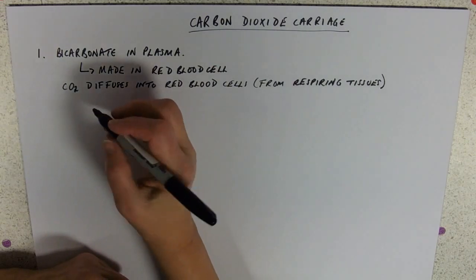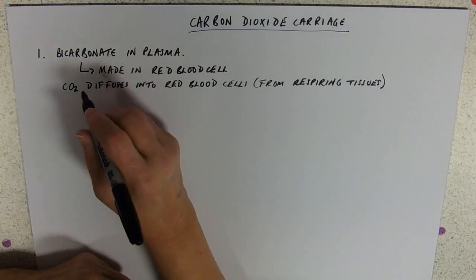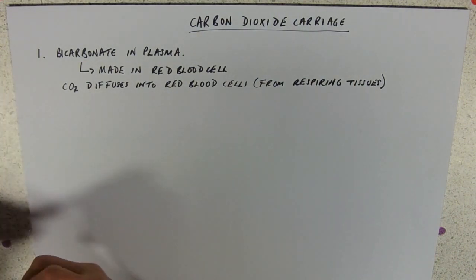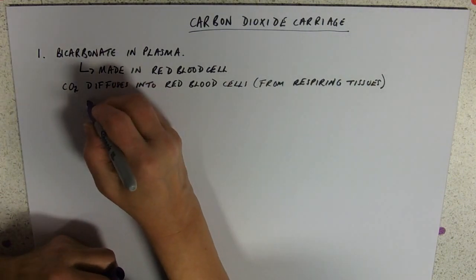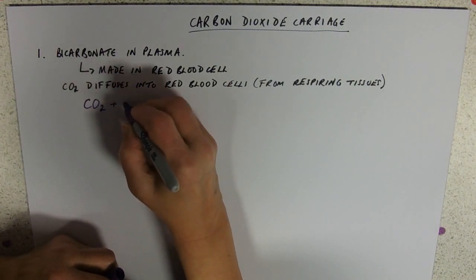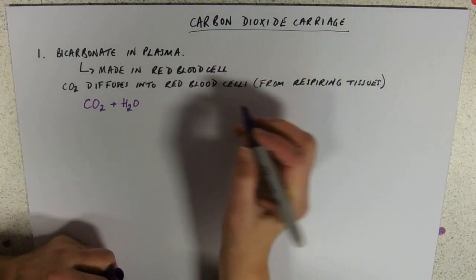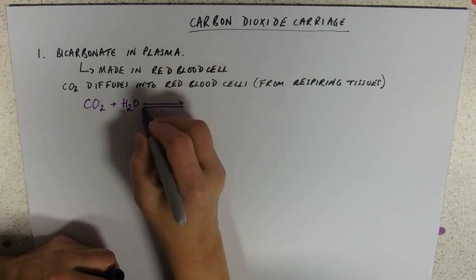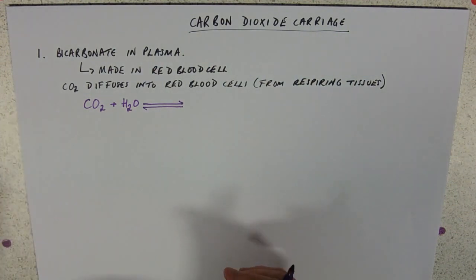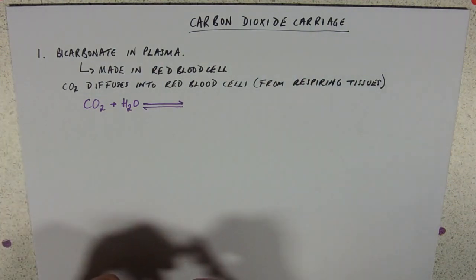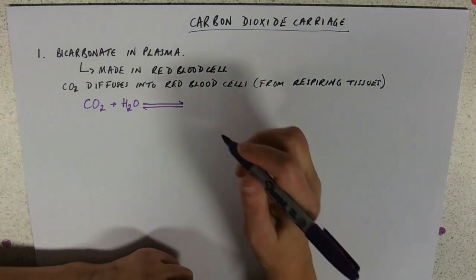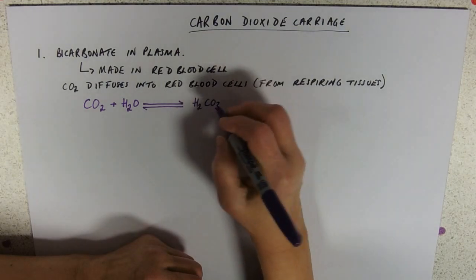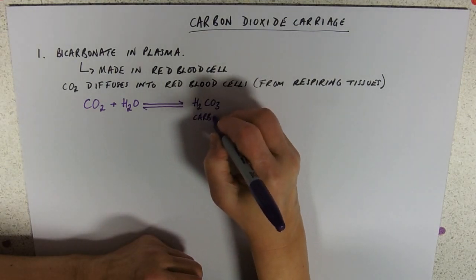So it diffuses into red blood cells and there it reacts with water. So this is our first sort of little equation that we need to learn. So carbon dioxide plus water and I'm going to make this arrow reversible because obviously when you're dumping your carbon dioxide back at the alveoli it's all going to need to go backwards. And this is going to make H2CO3 which has the name carbonic acid.